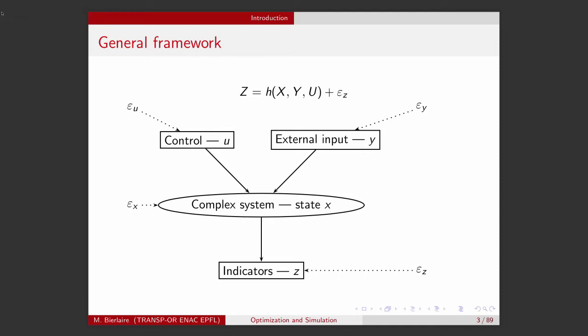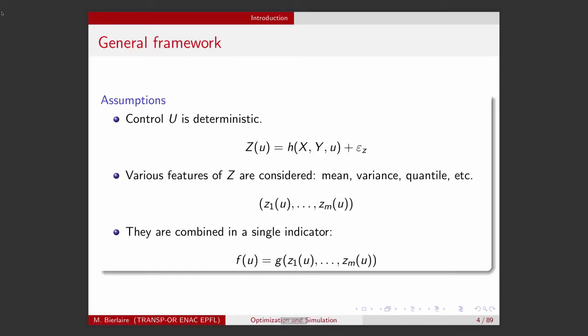All these quantities — X, Y, U, and Z — are random variables. This is how we introduced the concept of simulation, because we needed to calculate how the uncertainty was propagating through the system using this formulation. Now, in the context of optimization, we will focus on the variable U, the control variable, because these variables give us the way to change the configuration of the system in such a way that we make it better. And this is the concept of optimization.